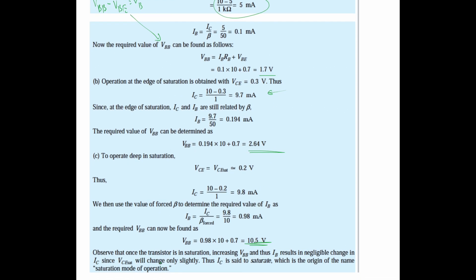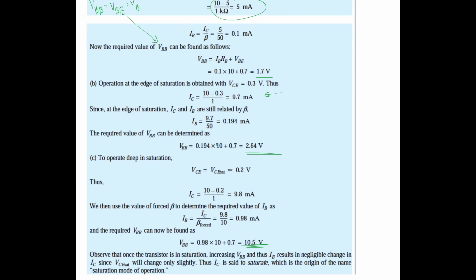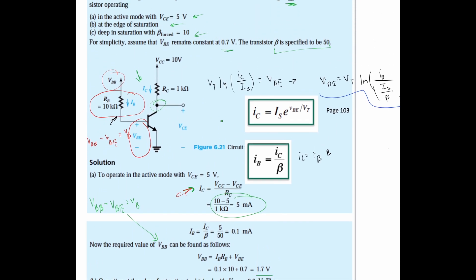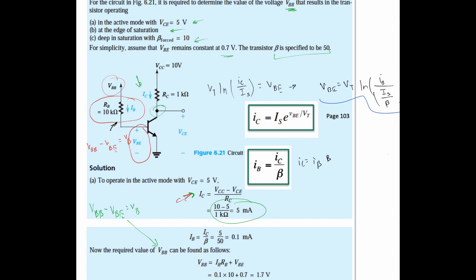Observe that once the transistor is in saturation, increasing VBB and thus IB results in negligible change in IC, since VC will change only slightly. Thus IC is said to saturate, which is the origin of the name saturation mode operation. That's going to be it for this problem. We're basically making a general equation and then plugging in our values to see what we get.